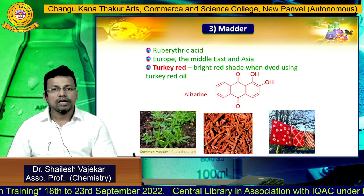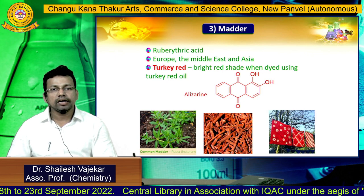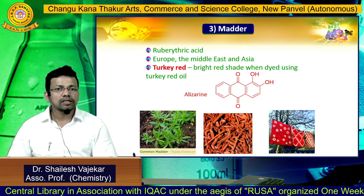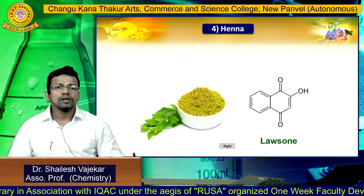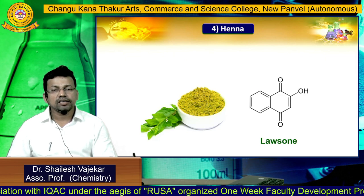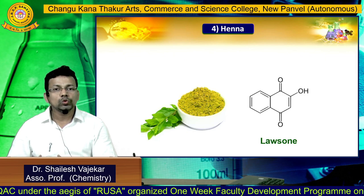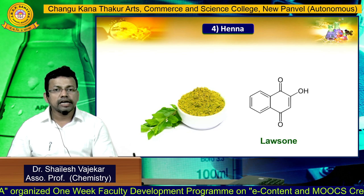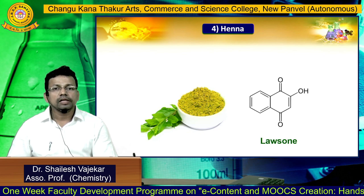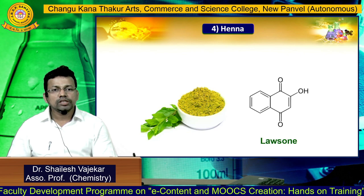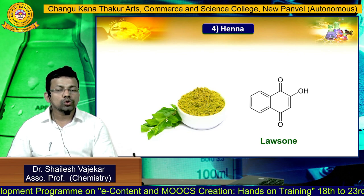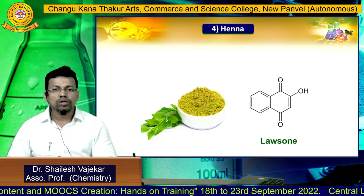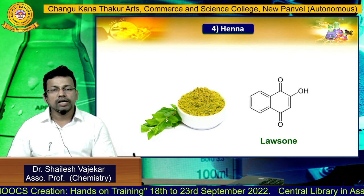There is another name for this dye: turkey red, because it gives a bright red shade when dyed using turkey red oil. We can see a picture showing fabric dyed with the madder plant. The next dye is hina (henna), which is very well-known and widely used, produced in large quantities. The chemical name of this dye is lawsone, which is 2-hydroxy-1,4-naphthoquinone, and it gives a reddish-brown shade.